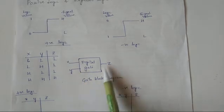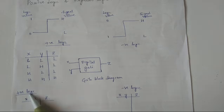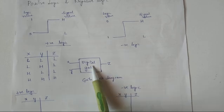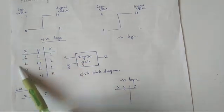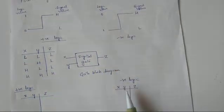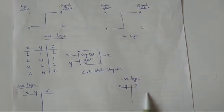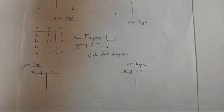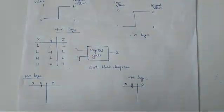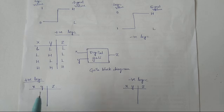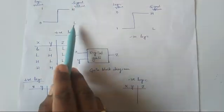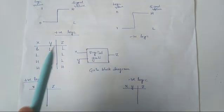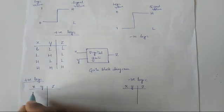If we use positive logic for this gate, how will it behave? And for the same gate, if we use negative logic, how will it behave? Let us consider positive logic first. In positive logic, the signal level L is represented by the logic value 0, and wherever H appears we write 1.